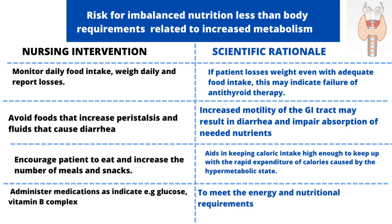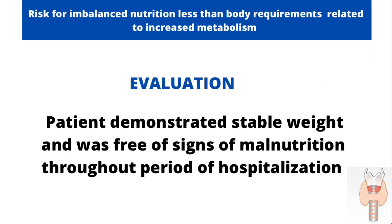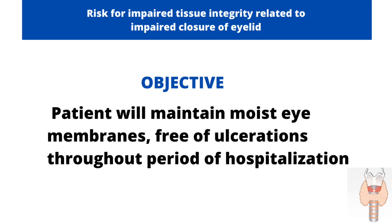Their food is getting digested so quickly and they are using a lot of energy, so you need to keep up with that. Finally, administer medications as indicated — such as glucose and vitamin B complex — to meet the energy and nutritional requirements of the patient. The evaluation: the patient demonstrated stable weight and was free of signs of malnutrition throughout the period of hospitalization.